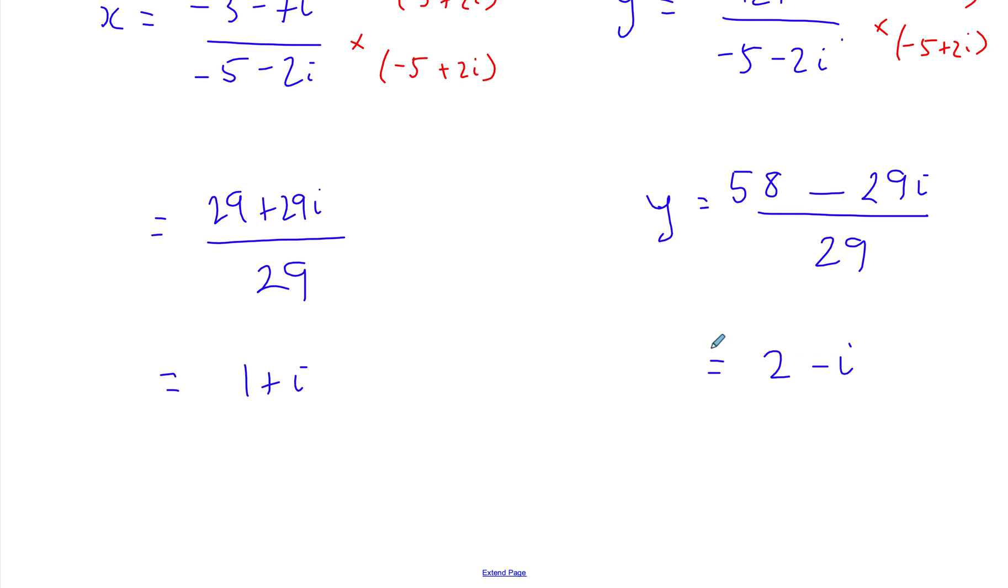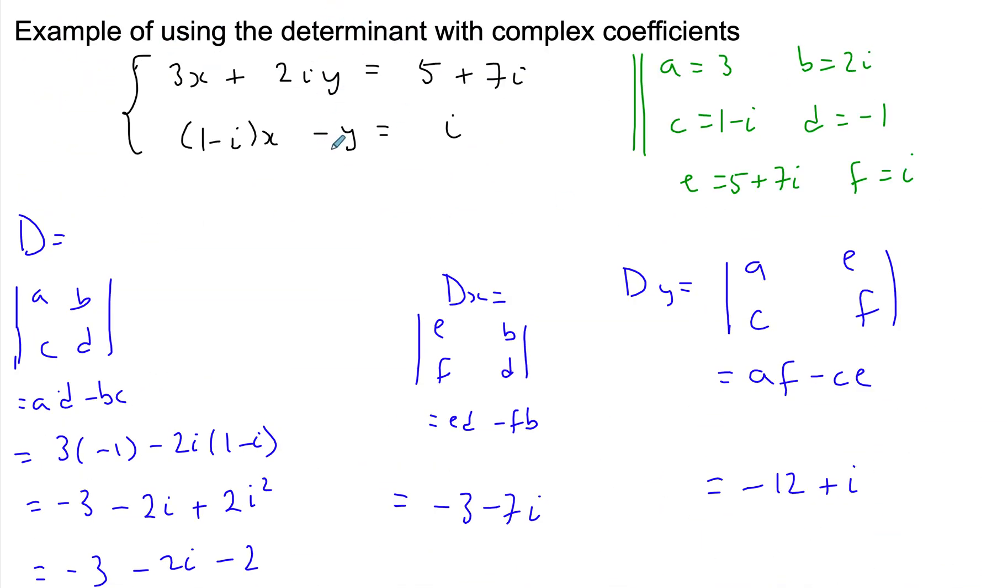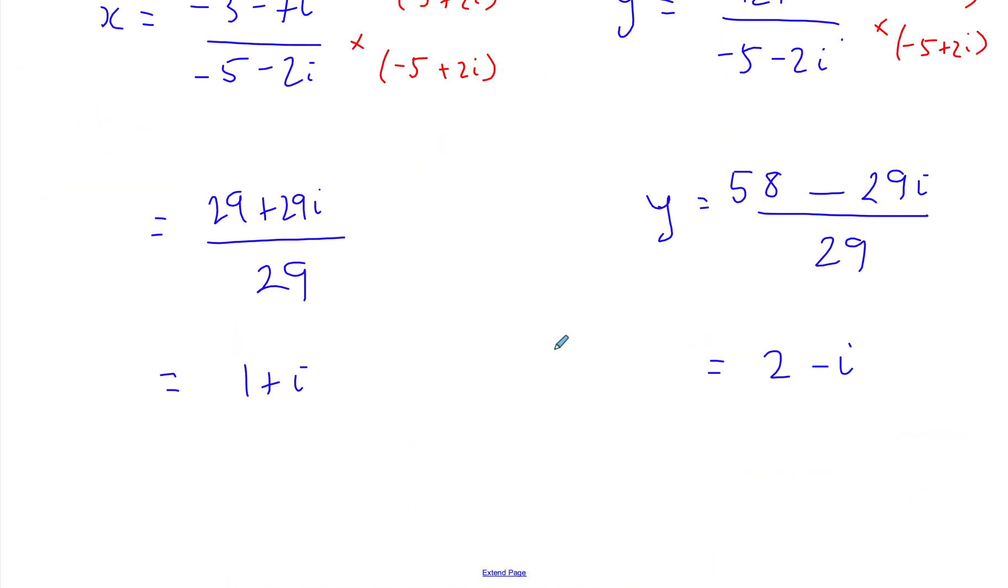There are tools on the GDC where you can substitute in the system of equations. This is the simultaneous poly solver. Make sure that you enter the coefficients as complex, and you're going to get the two solutions.